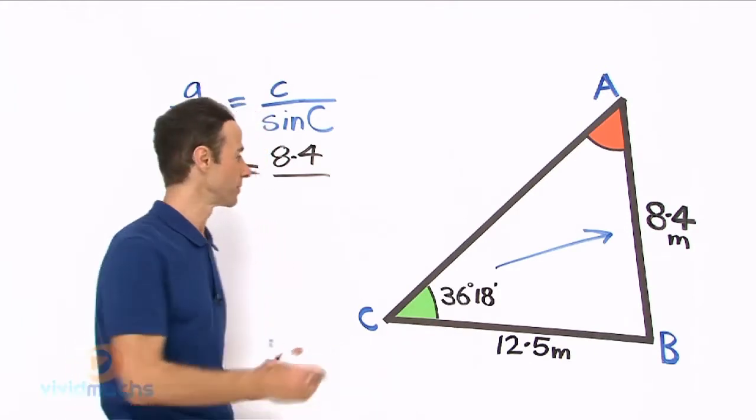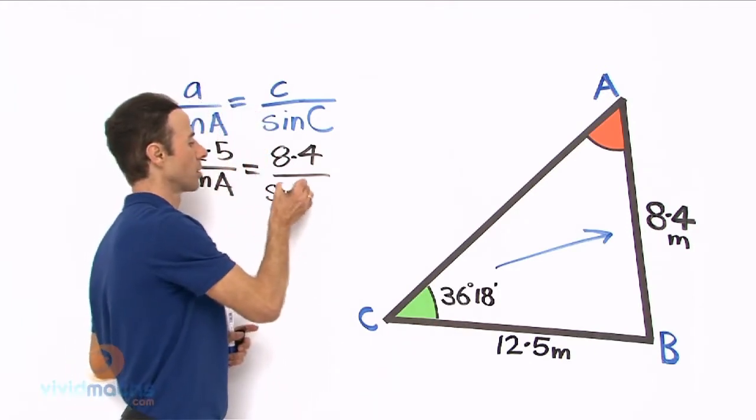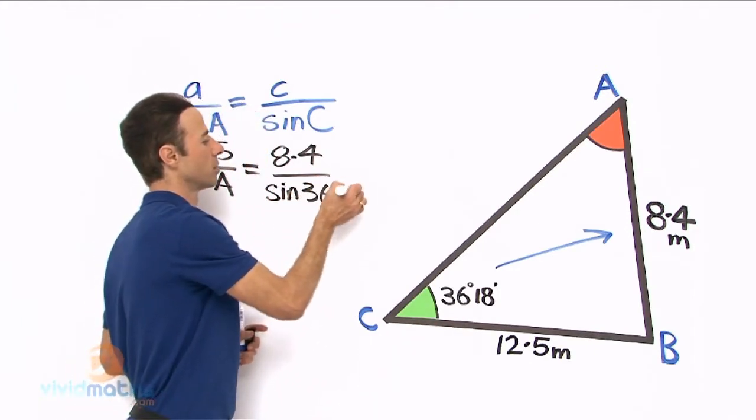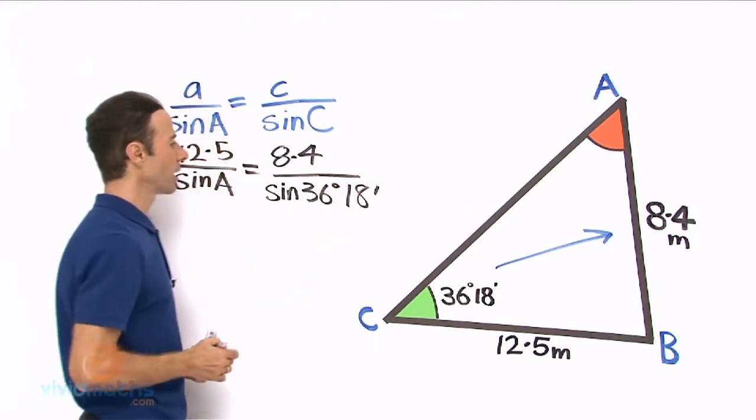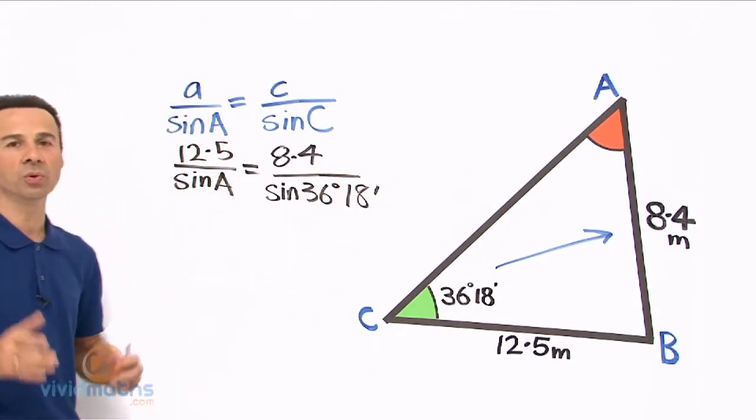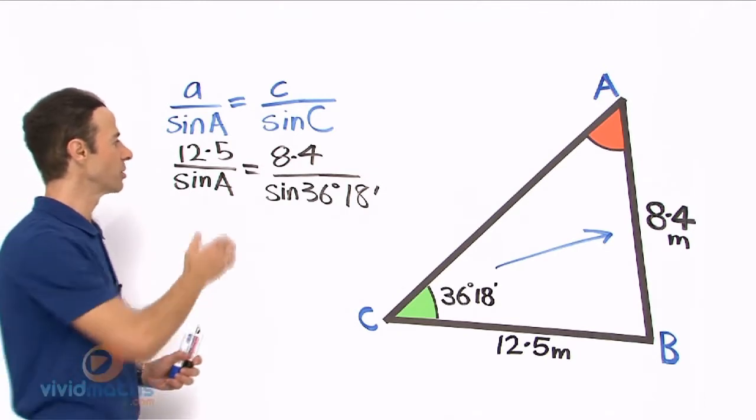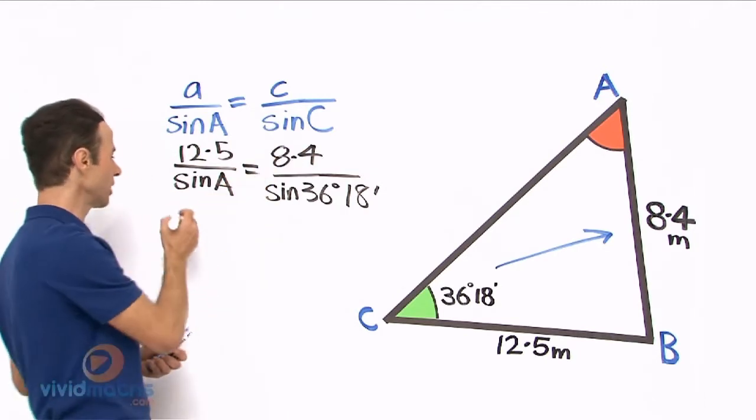All we have to do now is to cross multiply as we normally do: that times that and that times that. So let's put that in.